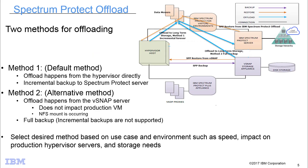There are two ways to offload images from Spectrum Protect Plus. The first method performs the offload directly from the hypervisor, utilizing an incremental backup when sending data via data movers to the Spectrum Protect Server. The alternative method takes existing backup images from Spectrum Protect Plus's VSNAP storage appliance and sends those through the data movers to the IBM Spectrum Protect Server as a full backup.